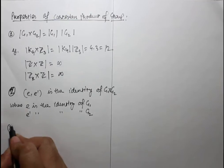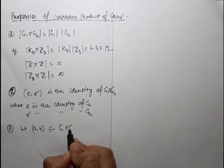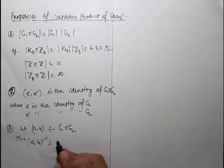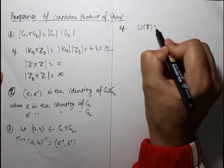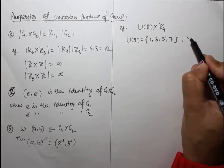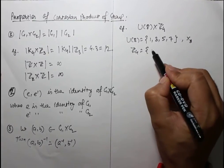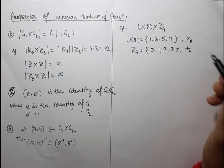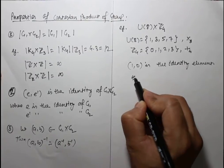Property 2: The element (E, E') is the identity of G1 cross G2, where E is the identity of G1 and E' is the identity of G2. Property 3: Let (A, B) belong to G1 cross G2; then the inverse of (A, B) equals (A inverse, B inverse). For example, consider U8 cross Z4, where U8 has elements under multiplication modulo 8 and Z4 has elements 0, 1, 2, 3 under addition modulo 4.